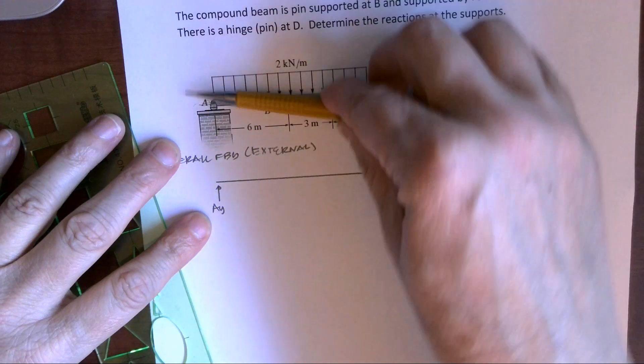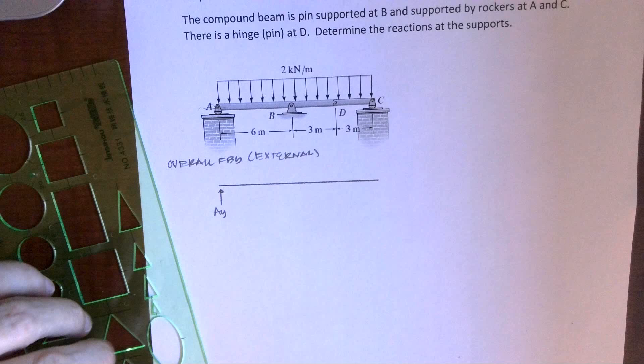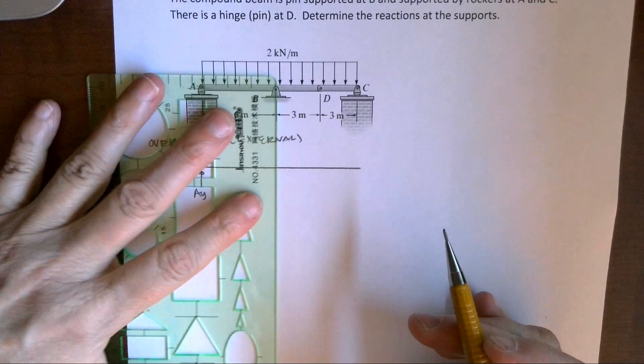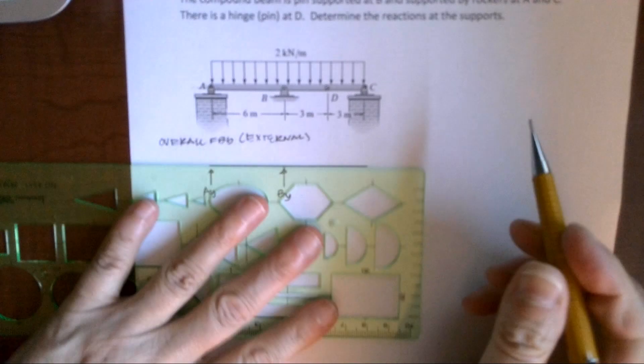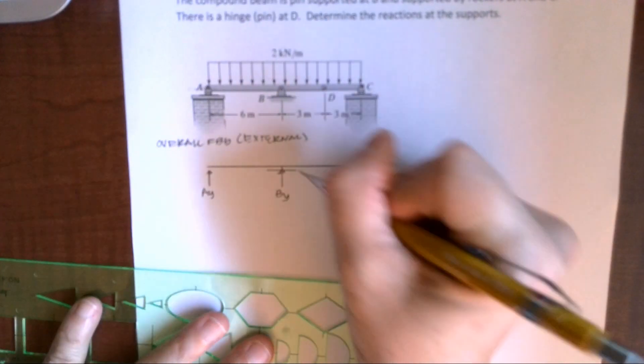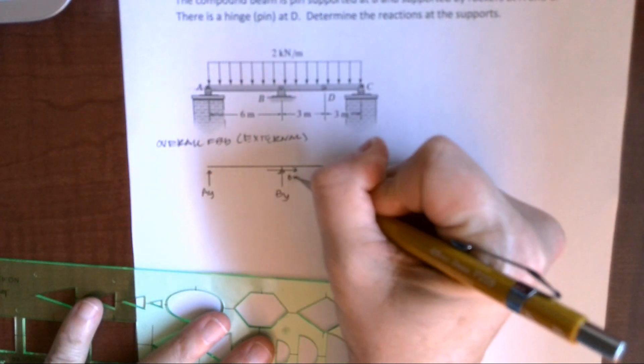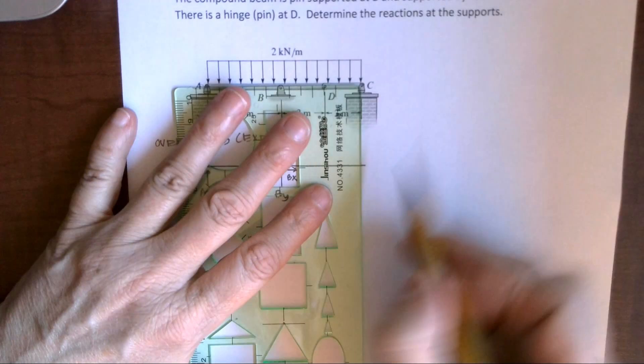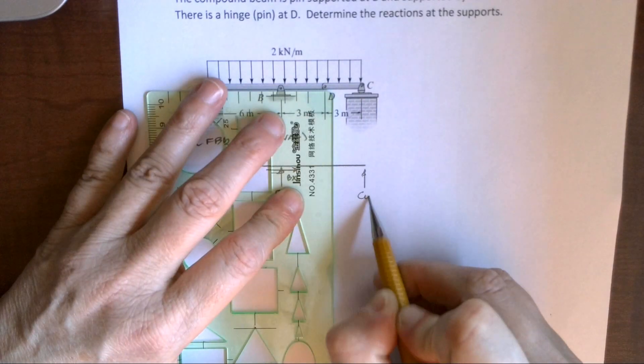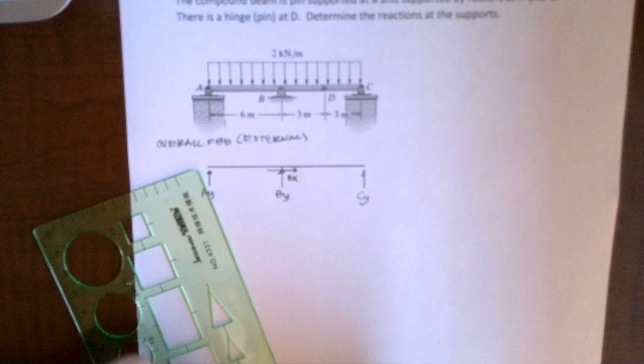And because it's a rocker, we can have rotation, which means we're not developing a moment. When I look here at B, I can develop both a Y component and an X component because I have a pin. Over here at C, I'm back to having a rocker. So we just develop that Y reaction or we have the capacity to.